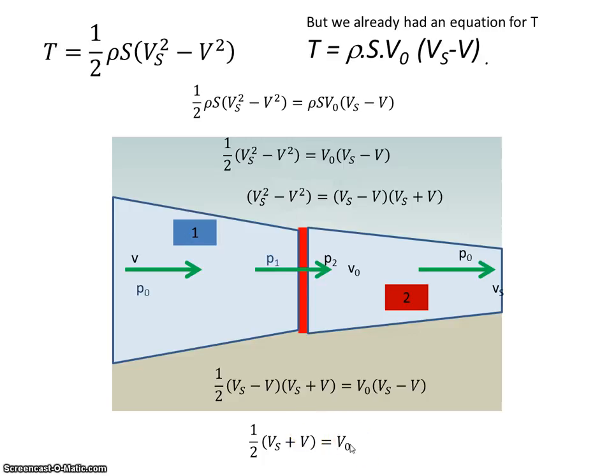The velocity of the air here through the propeller disc is the average value of the free stream velocity and the slip stream velocity. So the velocity through the disk is the average of the input and the output velocities.